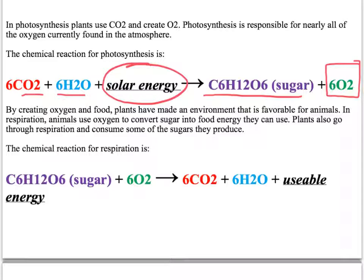Just to review, I'll just say these processes again. Carbon dioxide plus water plus solar energy yields glucose sugar and oxygen, and then cellular respiration is the opposite. Glucose sugar plus oxygen yields carbon dioxide and water and usable energy.